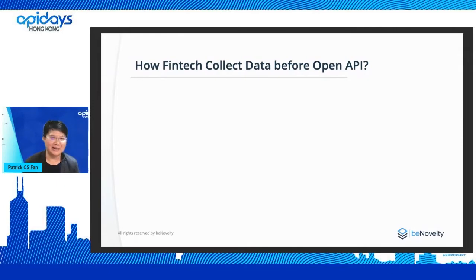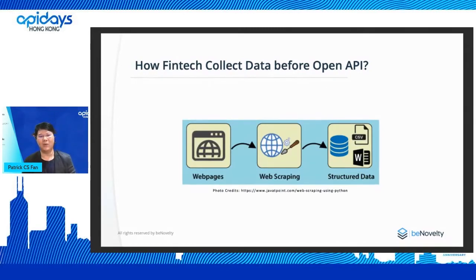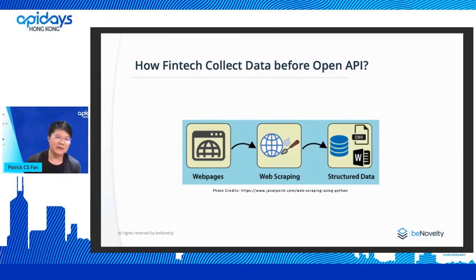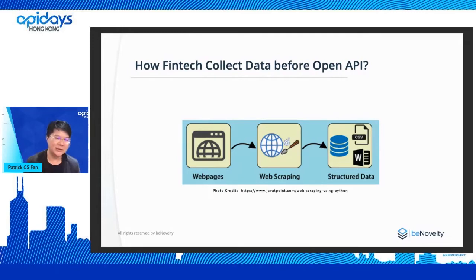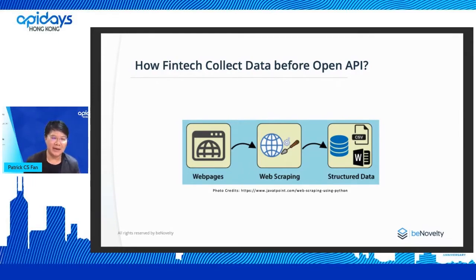How did fintechs collect data before the open API? There's a term technical people should be familiar with: screen scraping. In the old days, you might program in Python, go to a website, grab some data, and make it structured for another purpose. This was happening before open API standards, and even nowadays in regions without open banking regulations, screen scraping is still quite popular. But this puts the user at risk — they don't know how the data will be used, whether it's correct, and who is responsible and liable for decisions made from it.